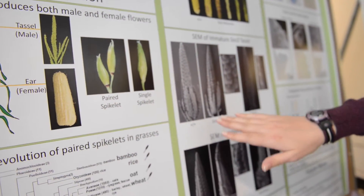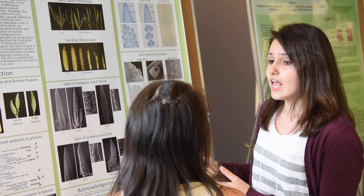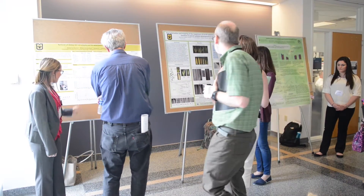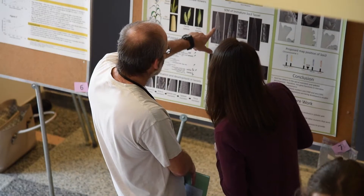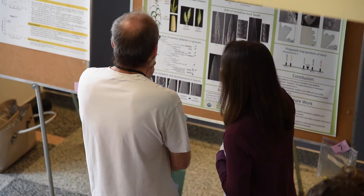In order to do this, we look at a branch called the spikelet, which goes on to produce the kernels in ears. We look at a specific mutant, the suppressor of sessile 3 or SOS 3 mutant, and it only produces single spikelets, where maize is supposed to produce paired spikelets.